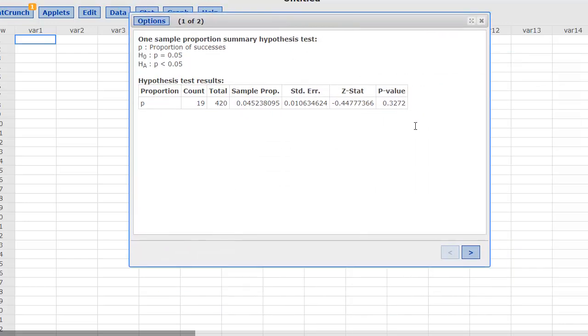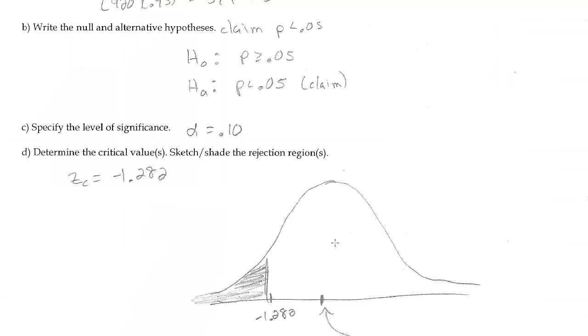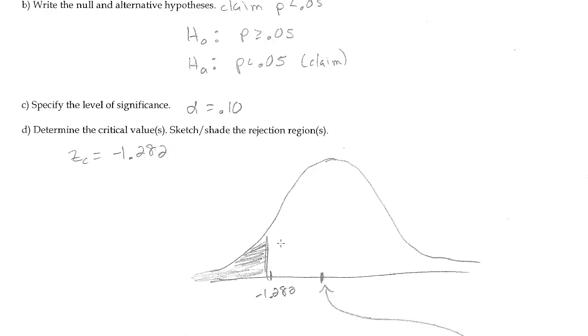Remember, with StatCrunch, it does not show me the critical value. We already used StatCrunch to calculate that. What StatCrunch does is gives me the p value, so I can compare the p value to the alpha. If p value is less than alpha, we reject the null.